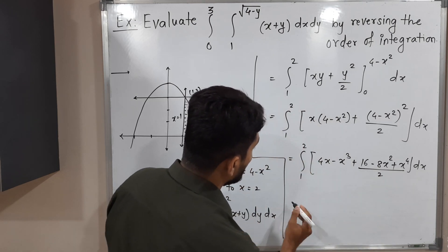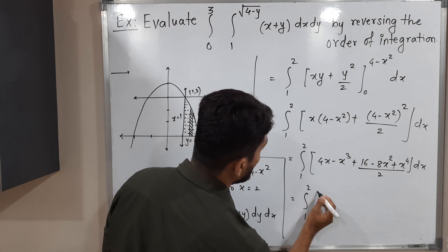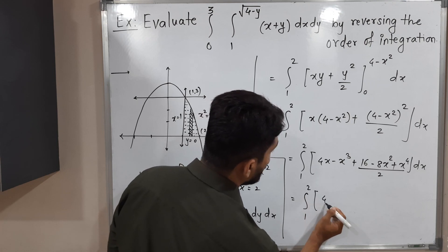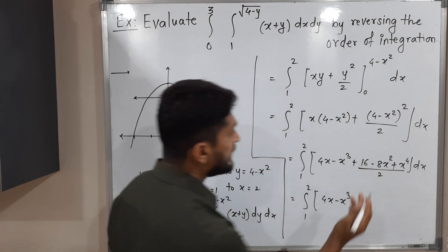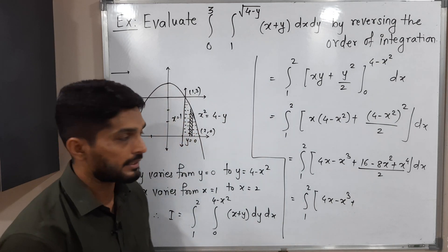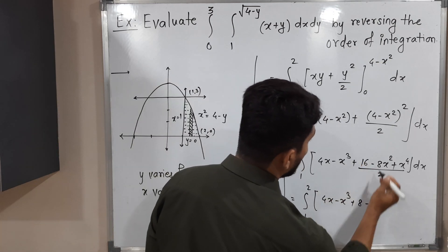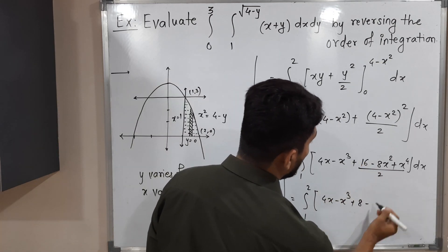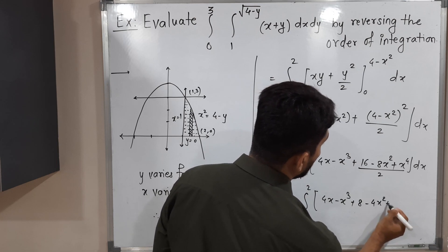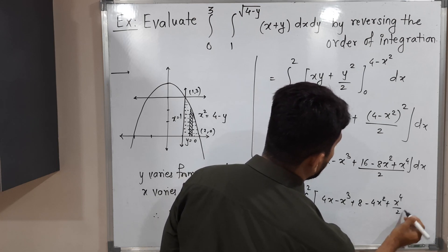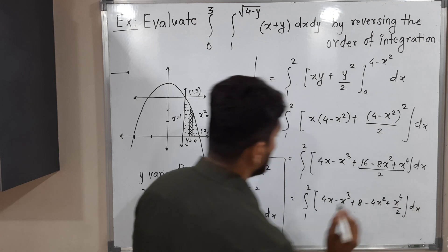So this equals the integral from 1 to 2 of: 4x minus x cubed plus 8 minus 4x squared plus x to the 4th over 2, dx.